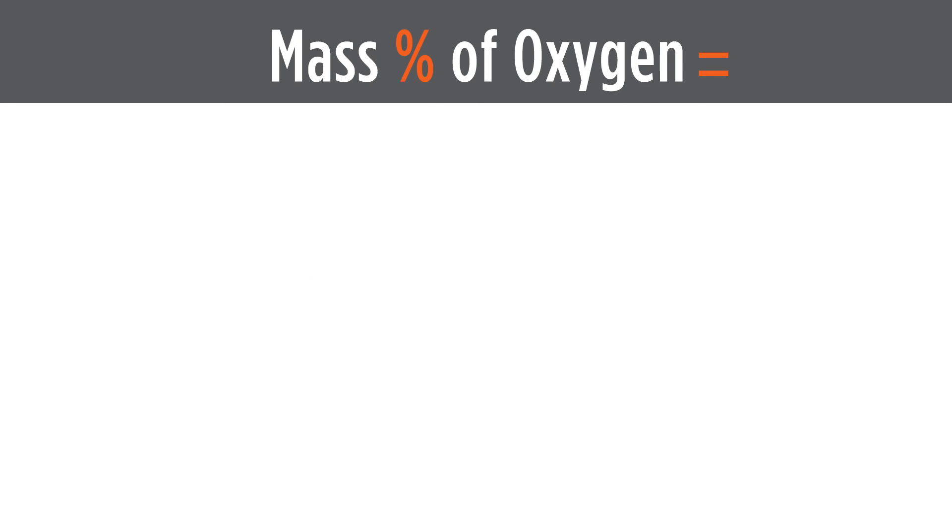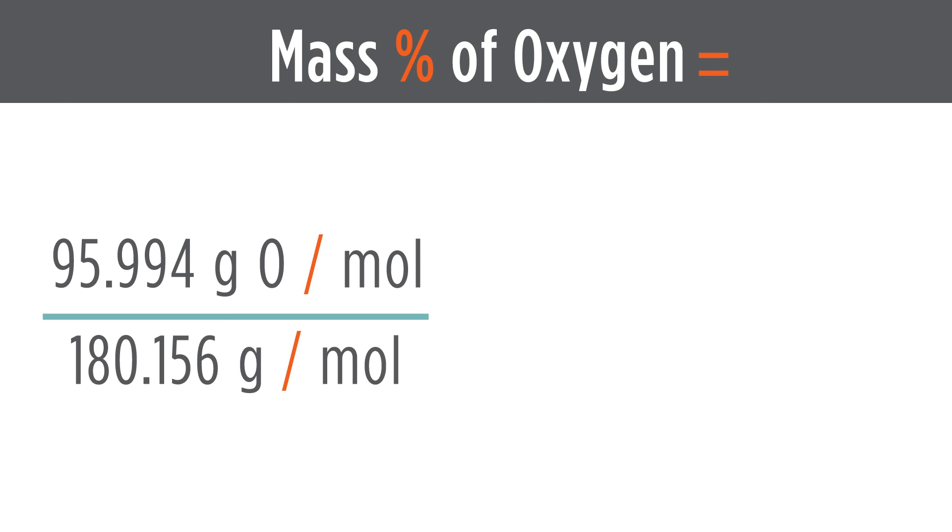Finally, for the mass percent of oxygen, we have 95.994 grams of oxygen per mole of glucose divided by the molar mass of 180.156 grams per mole, times 100%. This gives us 53.284%.